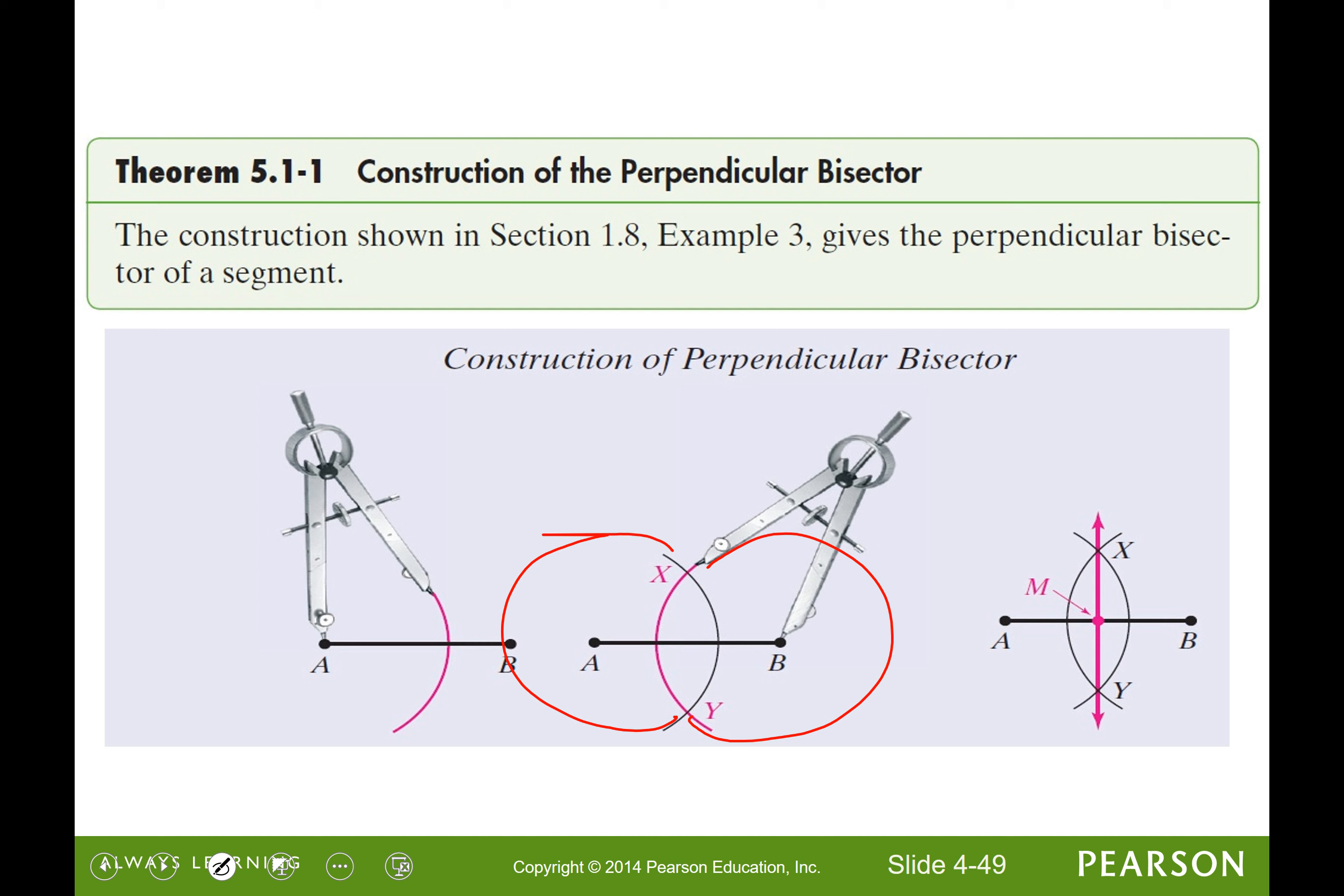...then we know that the distance from A to this intersection point, that's a radius of that circle and that'll be equal to the distance from B to that same point, it's a radius of this other circle. So if we just connect the dots we have cut that segment in two congruent pieces with a perpendicular line, perpendicular bisector.